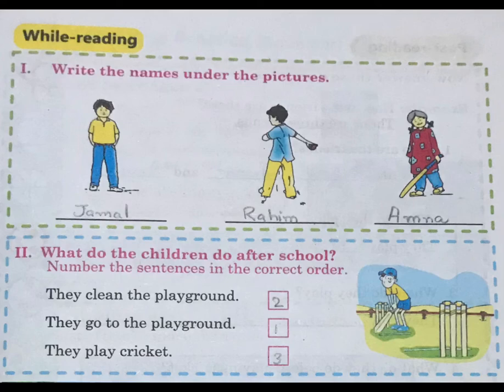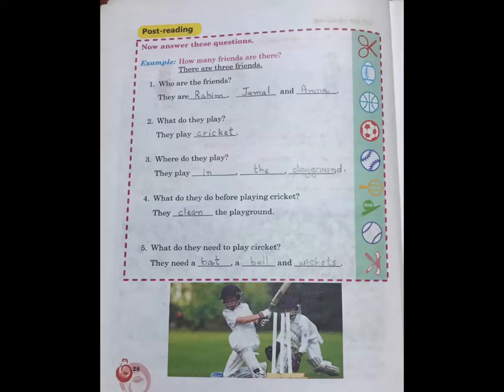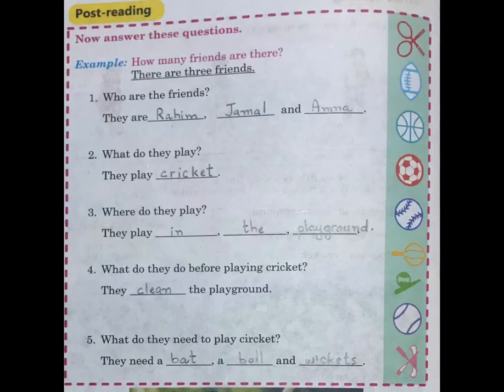Now look at page number 28. We have to answer the following questions. Example: How many friends are there? There are 3 friends. Question 1: Who are the friends? They are Raheem, Jamal and Amna. Question 2: What do they play? They play cricket.